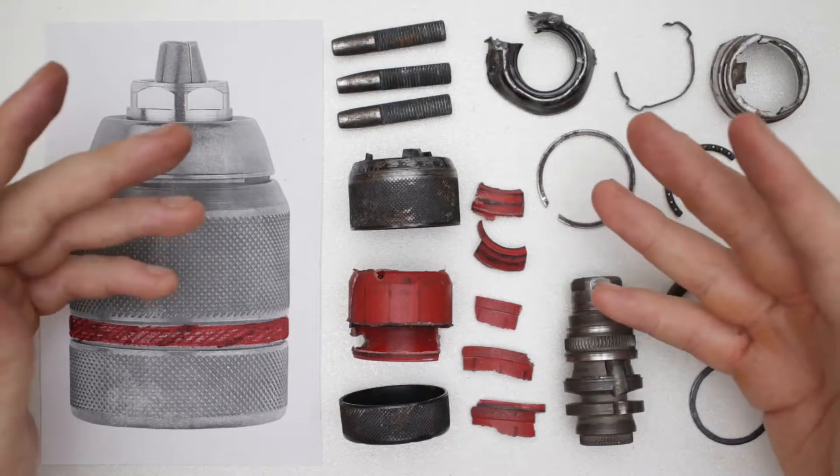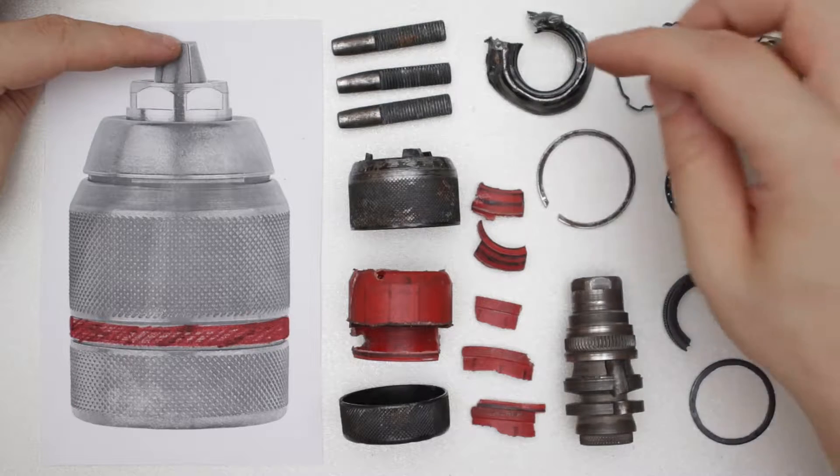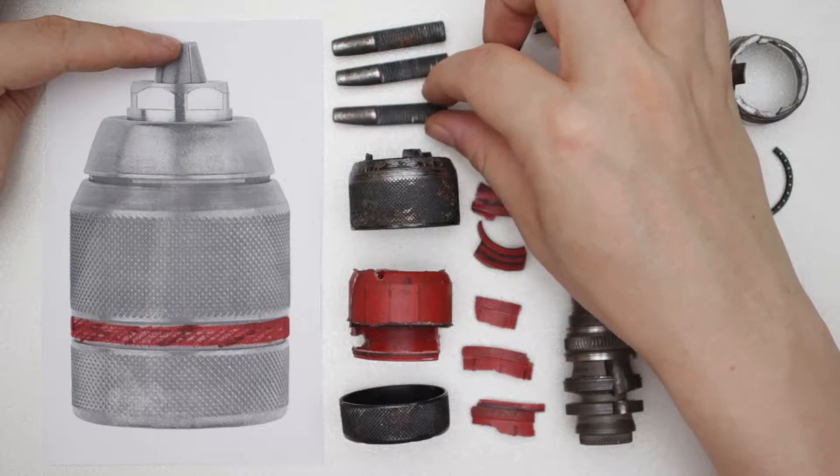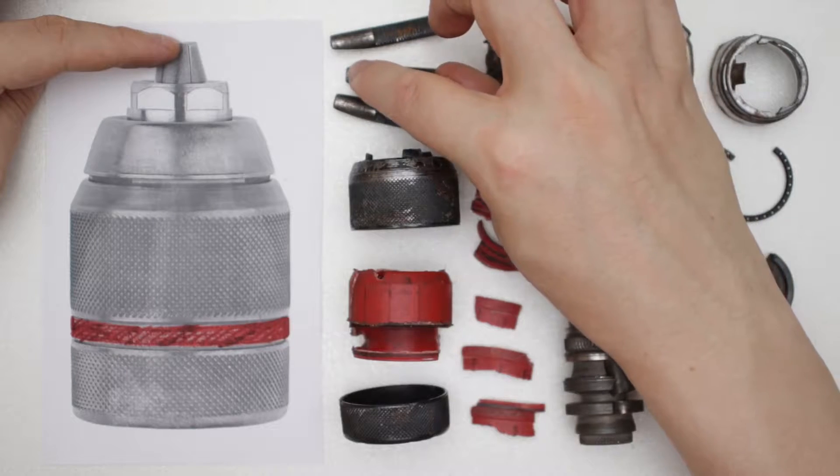So let's have a look at our parts. These here are the three jaws, which we see here, which have threads on this side. And this is the contact surface with the drill.